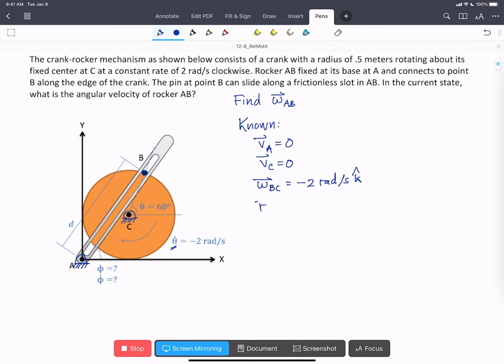We know that R of B with respect to C is going to be 0.5, that's the radius of the crank, and it's at an angle of 60 degrees. So we've got cos 60 i-hat plus sine 60 j-hat meters, and that's going to be equal to 0.25 i-hat plus 0.433 j-hat meters.